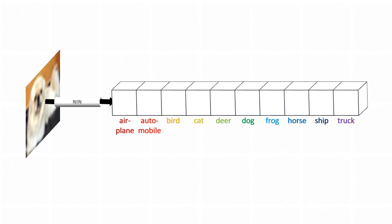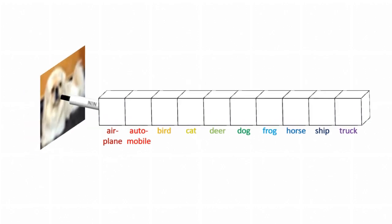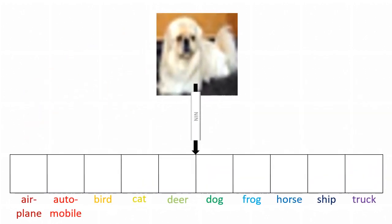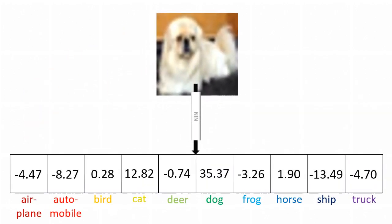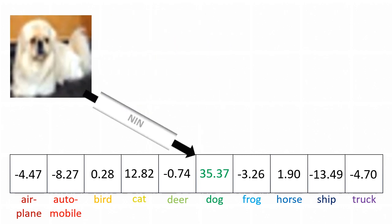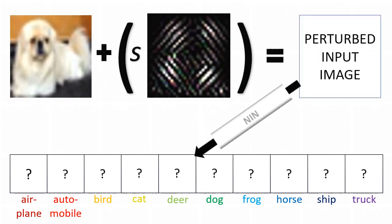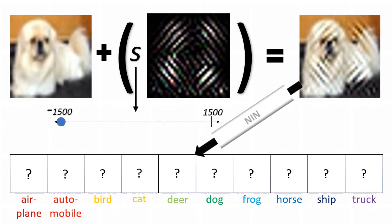Now let's input this dog image. The node representing the dog class has the highest score, so the net's prediction is correct. What if we blend in this special pattern? How do the class scores change?